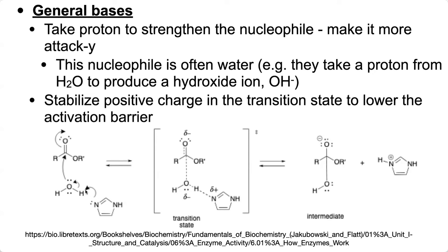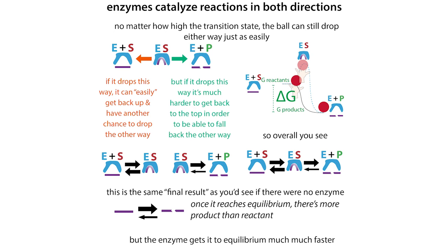In this case, a histidine is deprotonating this water, which is then going on the attack. We call this a general base — not specific — because we need this amino acid in order to activate the water, but it doesn't have to be a histidine; any general base would work. We need something that can take the proton from the water, because without help there aren't enough ions in the water to do this reaction. Once you have this, you're stabilizing the positive charge building up in the transition state, which lowers the activation barrier — that's how enzymes catalyze reactions.